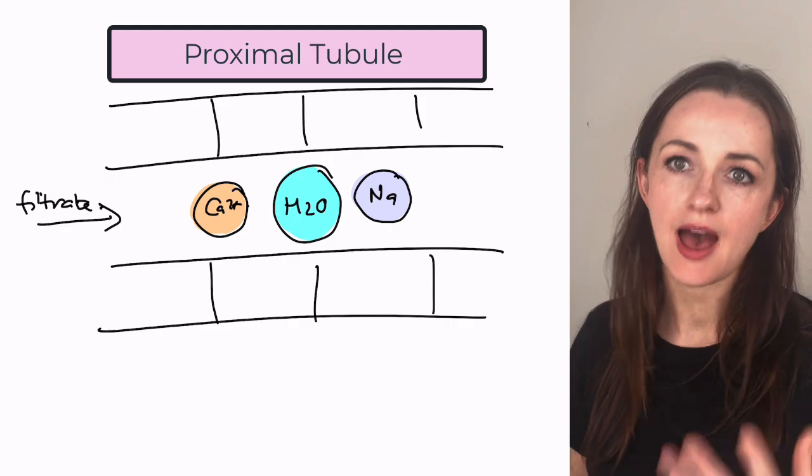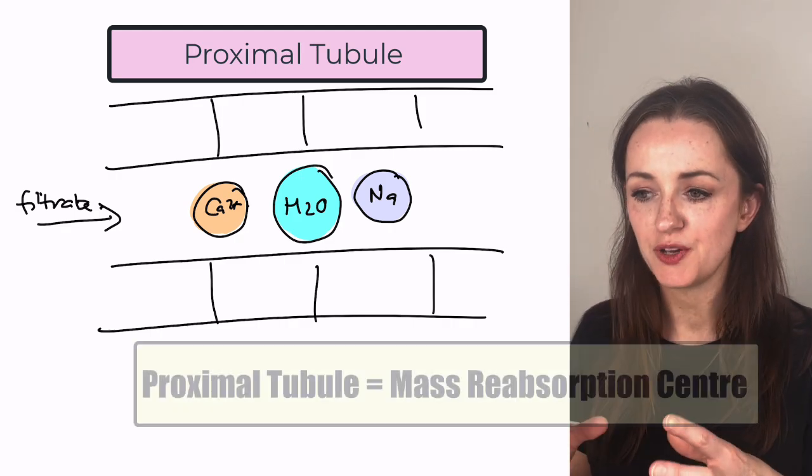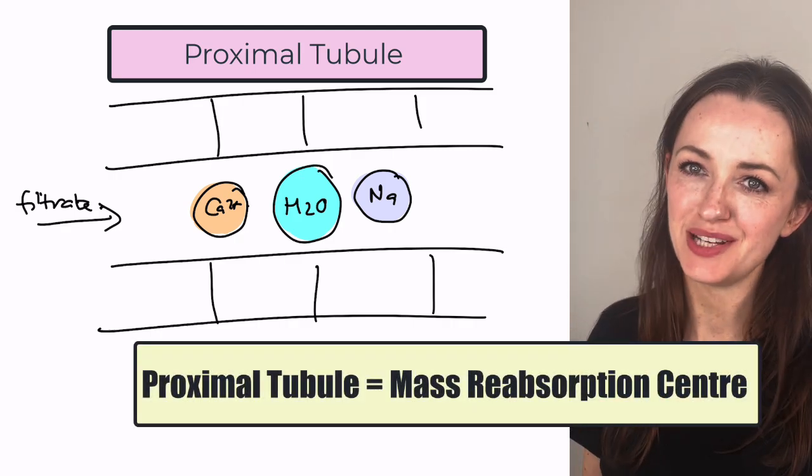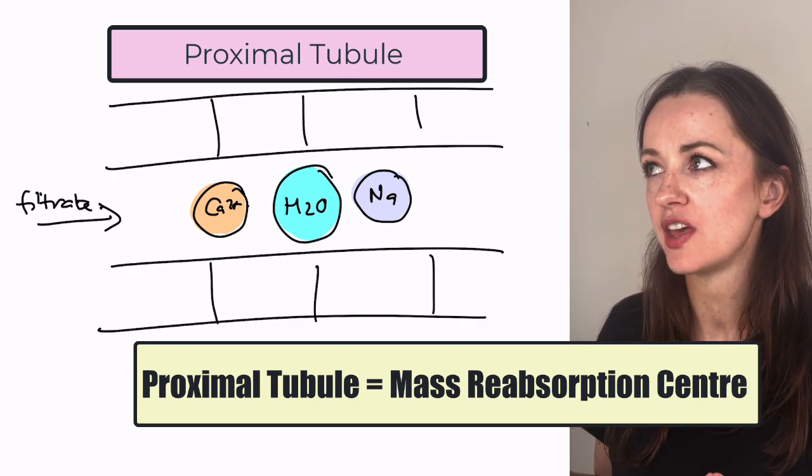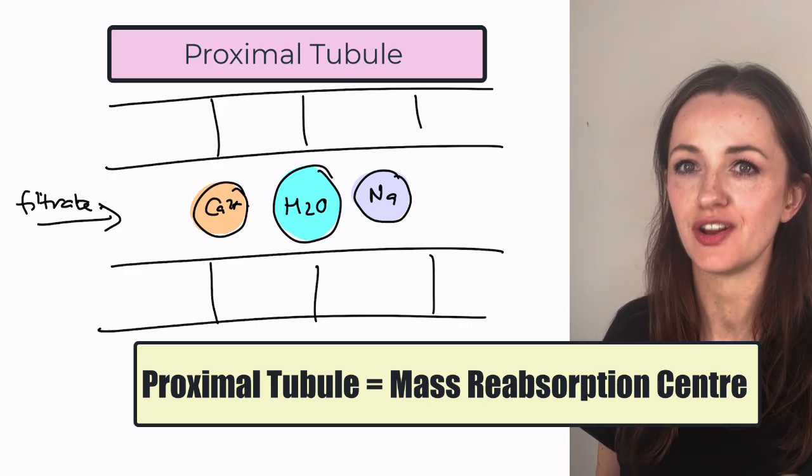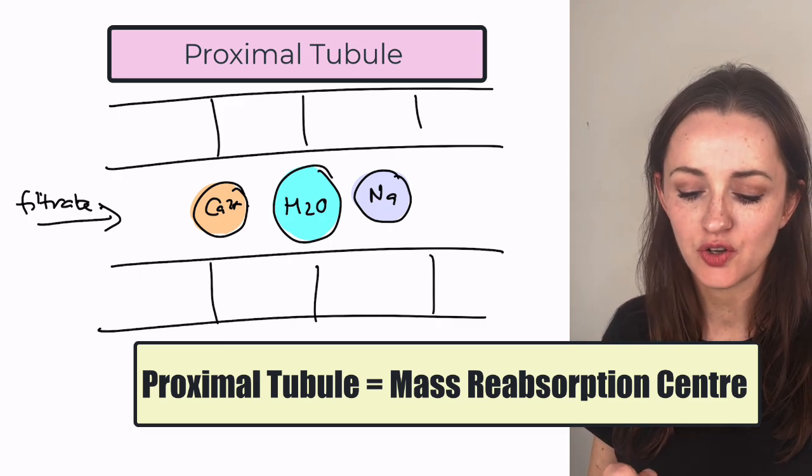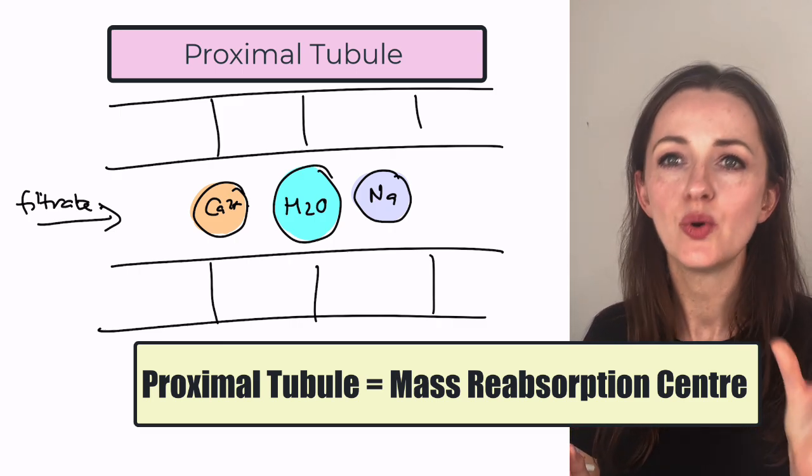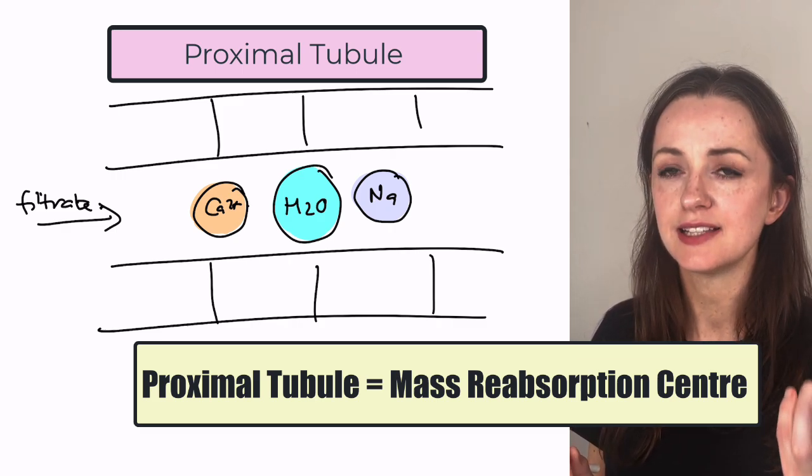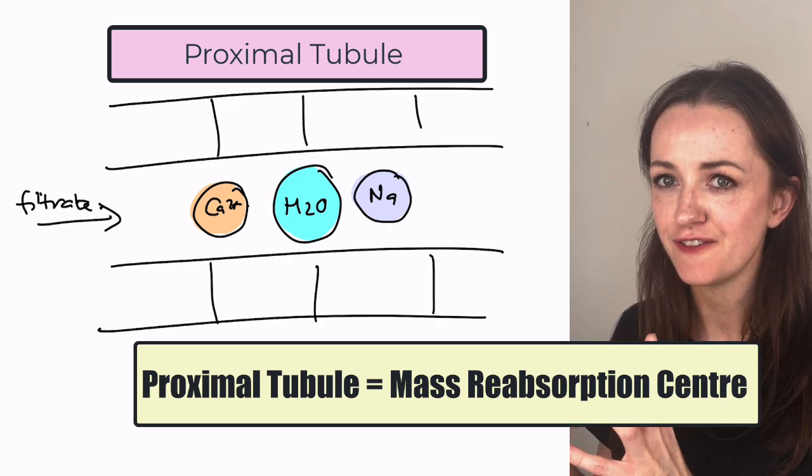So basically what's happening here, the proximal tubule is our mass reabsorption center, mass recycling center. So everything coming in from your plasma, if you can think about how useful all that stuff is, right? Everything that's coming in there, you've got salts, water, glucose, amino acids, there's no end of really handy things that are coming in here into the filtrate.